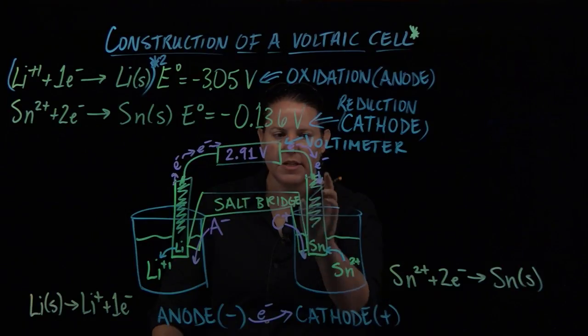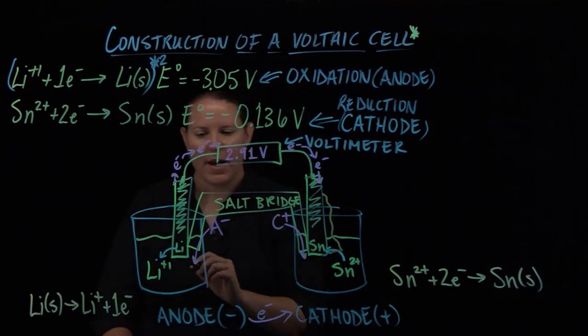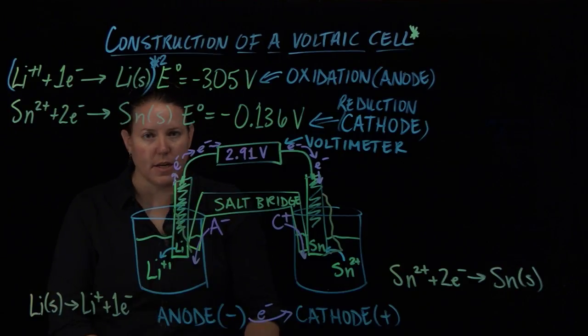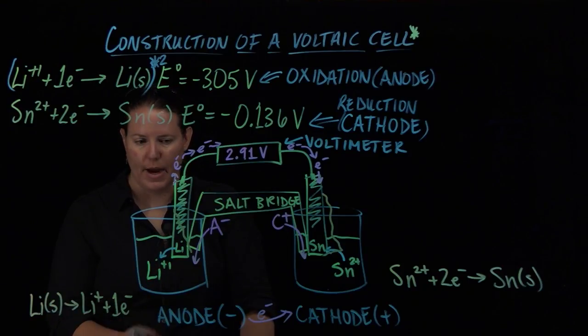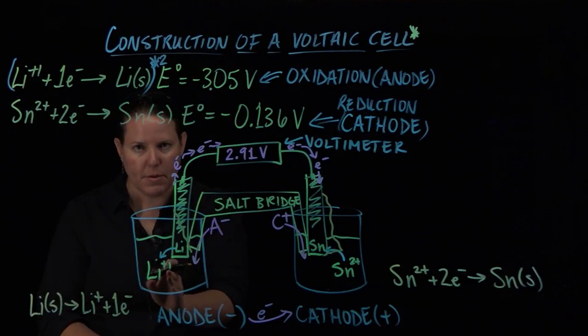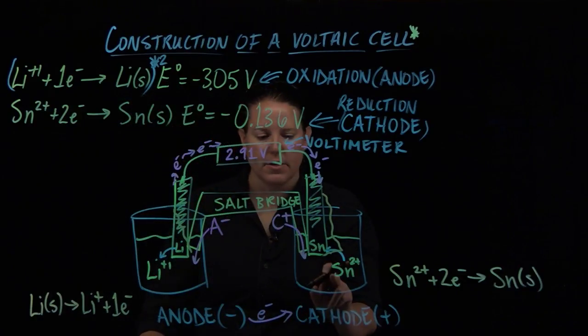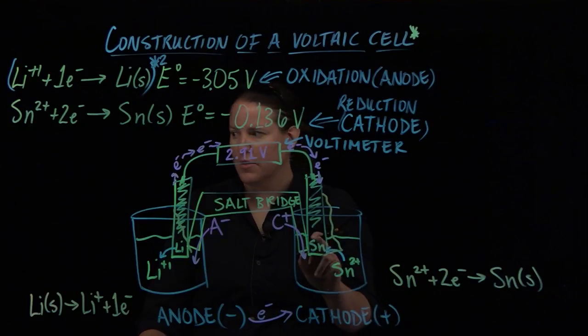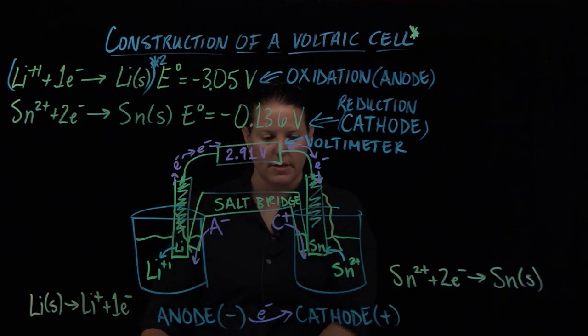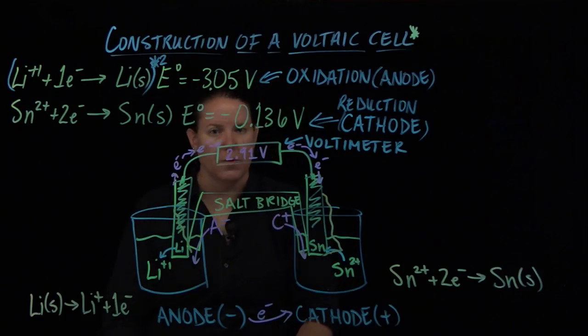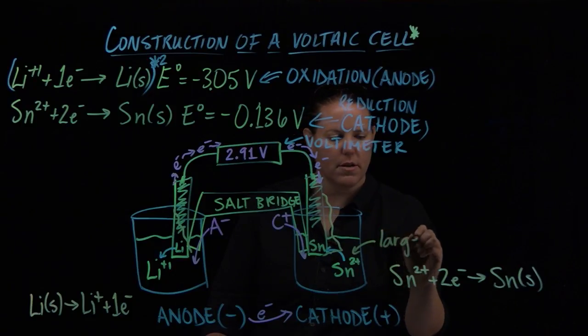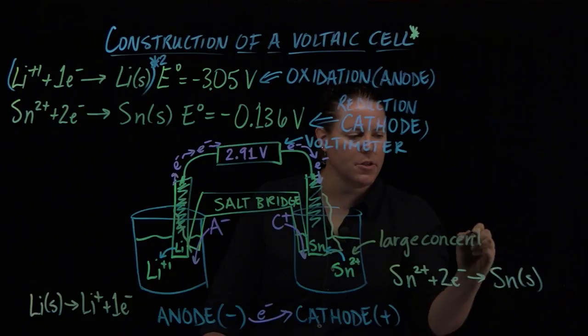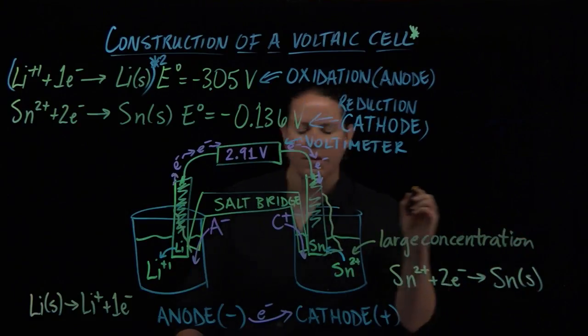This guy is going to become fatter over time and that guy is going to basically disappear over time. Which means if you wanted to load it such that it would actually make a difference, the anion here is used to stabilize the lithium ion, the cation here is to destabilize the tin 2+ ion so that it actually plates back onto the tin electrode. What you would do is you would make this solution a large concentration.